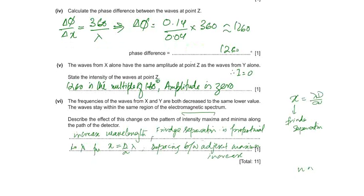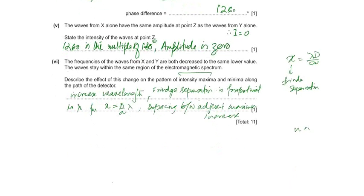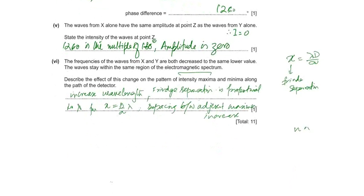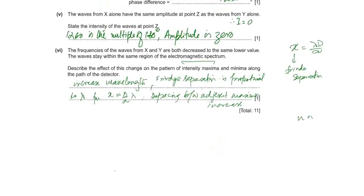The frequencies of the waves from X and Y are both lower values. If we decrease the lambda and the speed of the wave is the same, lambda will increase. If it is increased, then from the equation, X equals lambda D over A, which is D is the distance between the starting point of a wave and where it becomes intensity maxima.